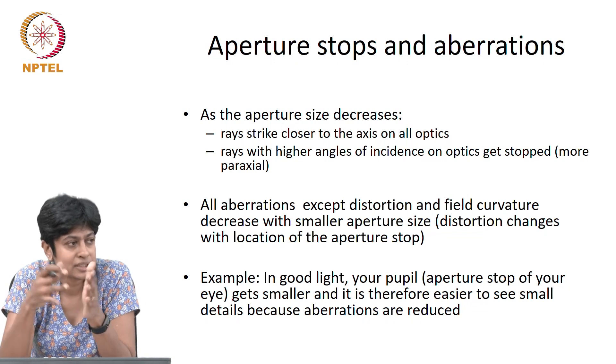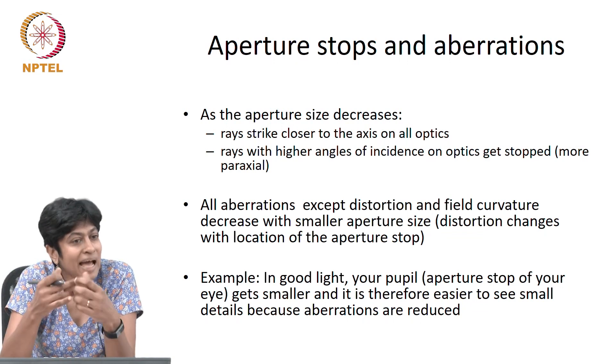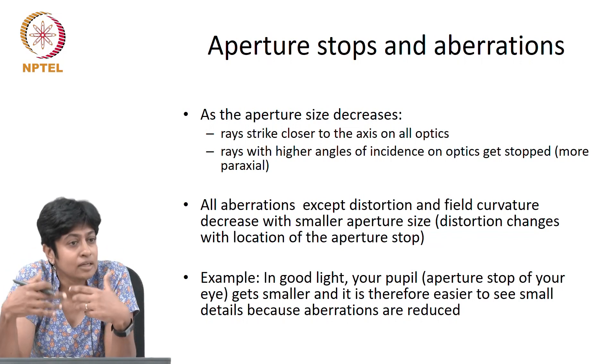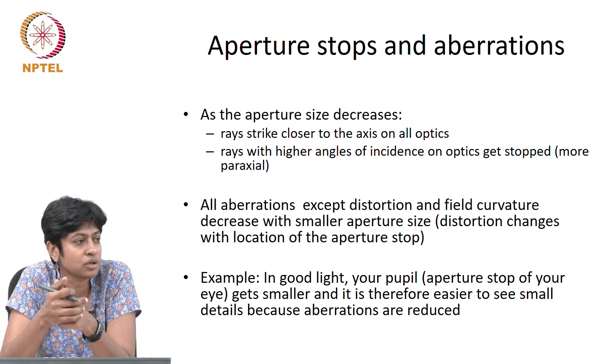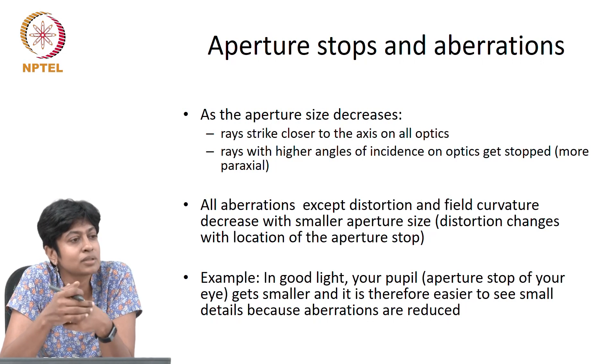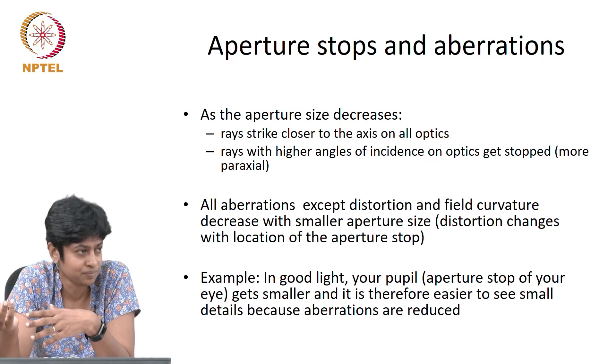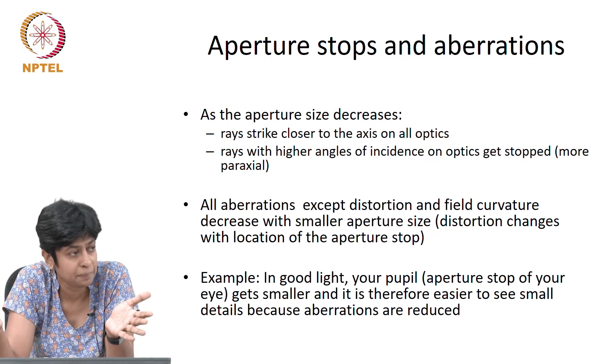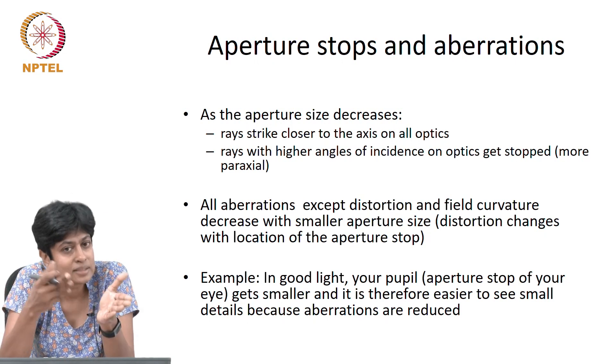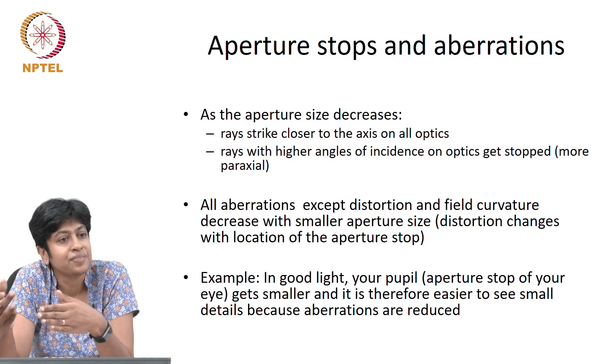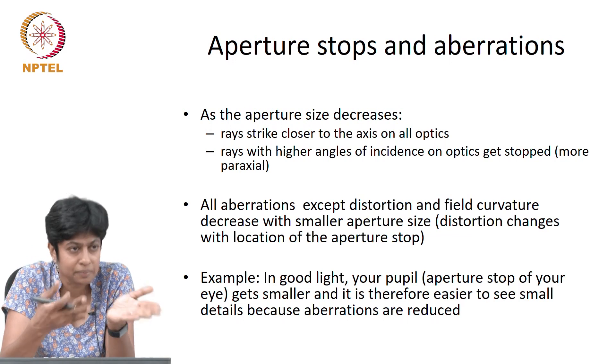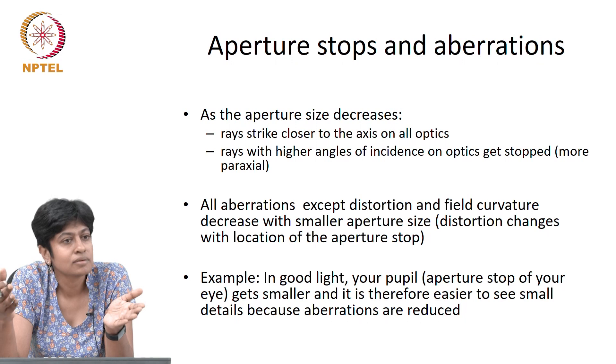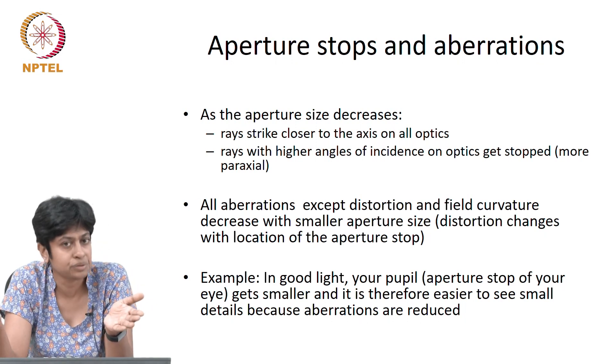We have not discussed aberrations in any detail, but as the name suggests, aberration means something is wrong. In optics and ray optics, when you talk about aberrations, you are talking about the image quality getting deteriorated. There are many different types of aberrations. We split them up and study them separately because if you understand the cause of each one, then fixing that particular one becomes easy. And because they each have a different cause, the way you fix them is going to be different also.